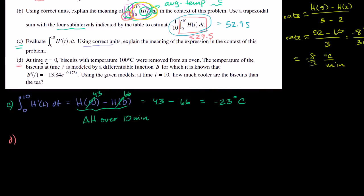Now part D. At time T equals 0, biscuits with temperature 100 degrees were removed from an oven. The temperature of the biscuits at time T is modeled by a differentiable function B, for which it is known that B prime of T equals negative 13.84 e to the negative 0.173t.